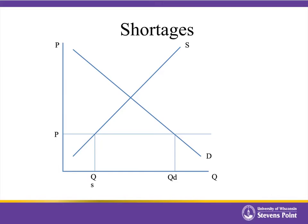If we look at this graphically, here we have a price that's below the equilibrium. At this price, the demand curve says this is how much consumers would like to buy. The supply curve says this is how much sellers are willing to offer for sale. The distance between the two would represent how big our shortage currently is — the difference between quantity demanded and quantity supplied.